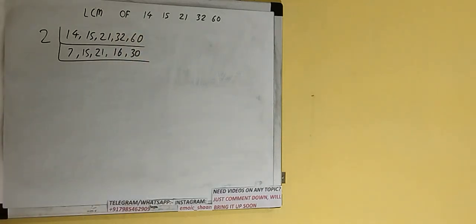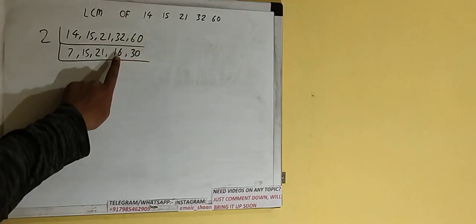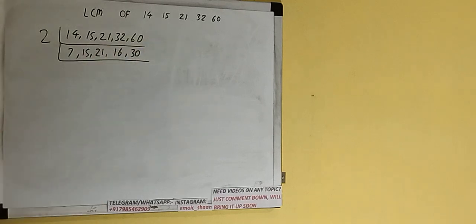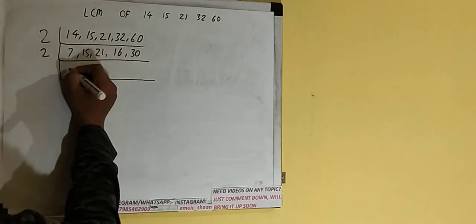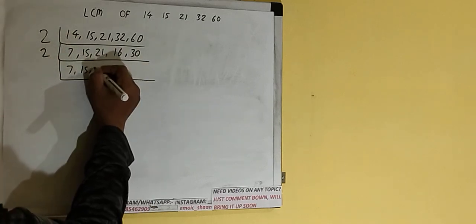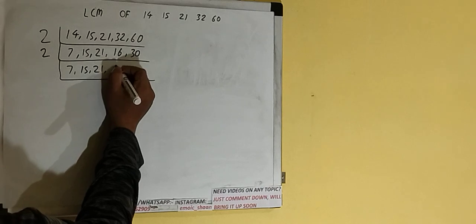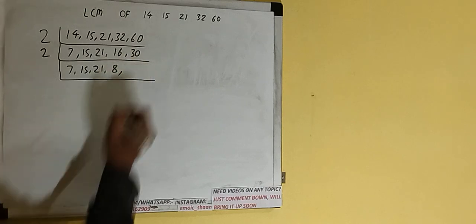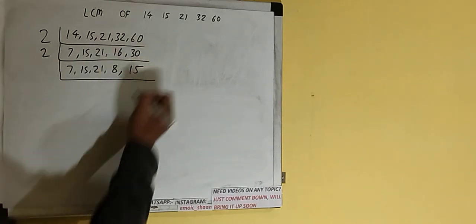Checking again, the last two numbers are still even and divisible by 2. The first three numbers — 7, 15, and 21 — remain the same. The fourth number becomes 8 on dividing, and the last number becomes 15.